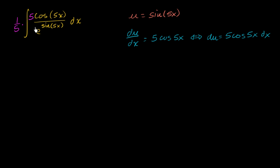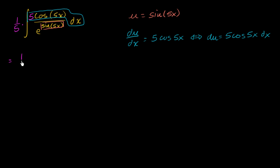When we do it this way, we can see pretty clearly that we have our u and we have our du. Our du is 5 cosine of 5x dx — let me circle that in blue. So we can rewrite this entire expression. That one fifth is in purple, and this is going to be one fifth times the integral of du over e to the u.